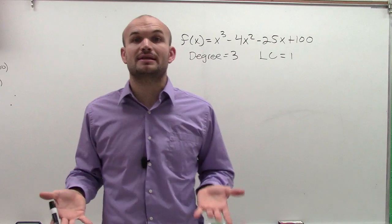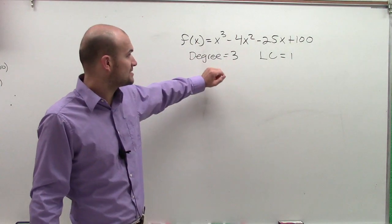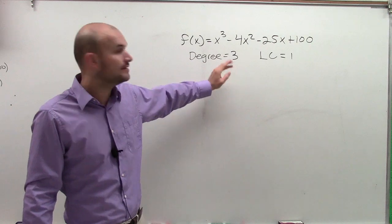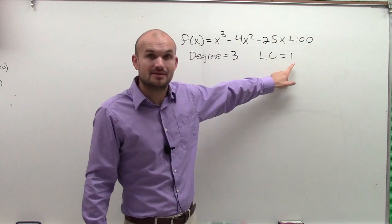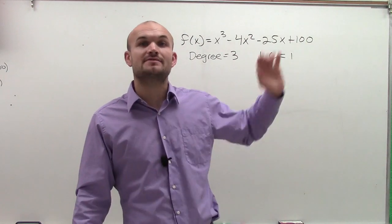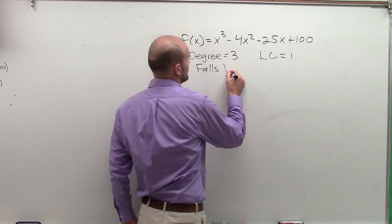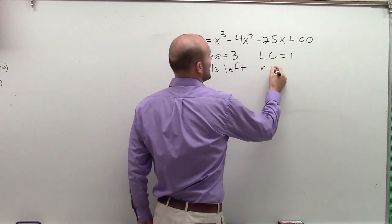Then what we're going to do is we're going to apply the leading coefficient test. And the leading coefficient test tells us if we have an odd degree and a positive leading coefficient, then our graph is going to fall to the left and rise to the right. So I'm just going to write falls left and rise to the right.